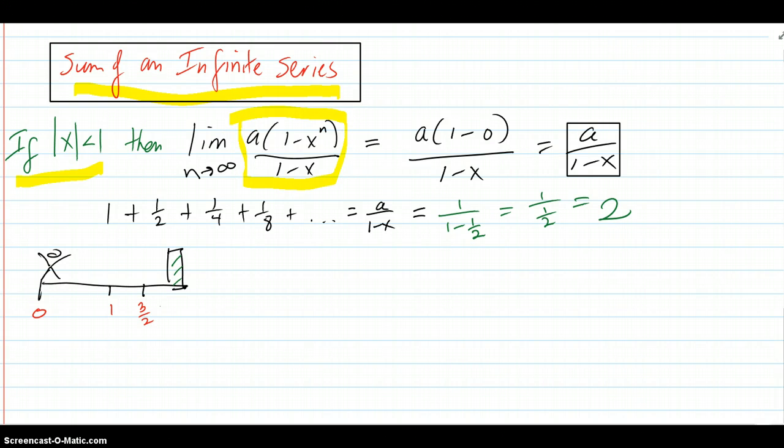Then, this limit as n goes to infinity of these n sums—each one of these is a capital S to the n. The limit of those sums will go to, as long as the absolute value of x is less than 1, then x to the n will go to 0. That's why you have a 0 here. Everything else is constants. So, we're just going to end up going to that expression there.